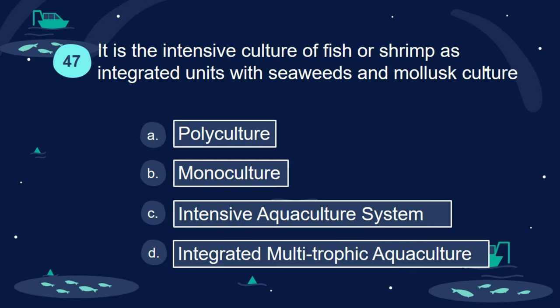Question 47. It is the intensive culture of fish or shrimp as integrated units with seaweeds and mollusk culture. A. Polyculture. B. Monoculture. C. Intensive aquaculture system. D. Integrated multi-trophic aquaculture.